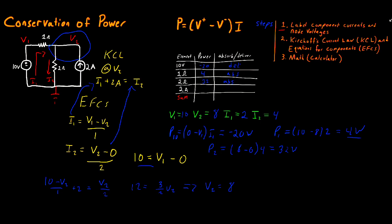Now for the 2 amp source — no rules change. Power for the 2 amp source equals the voltage across it, subtracted in the direction of the current: 0 minus V2, multiplied by 2 amps. That's (0 minus 8) times 2 equals negative 16 watts. This is delivered. Now if you add all of these up — negative 20, plus 4, plus 32, plus negative 16 — the total power for the circuit equals zero. That's what you should expect for every single problem. If the total is not equal to zero, there is a mistake somewhere and you have violated conservation of power.